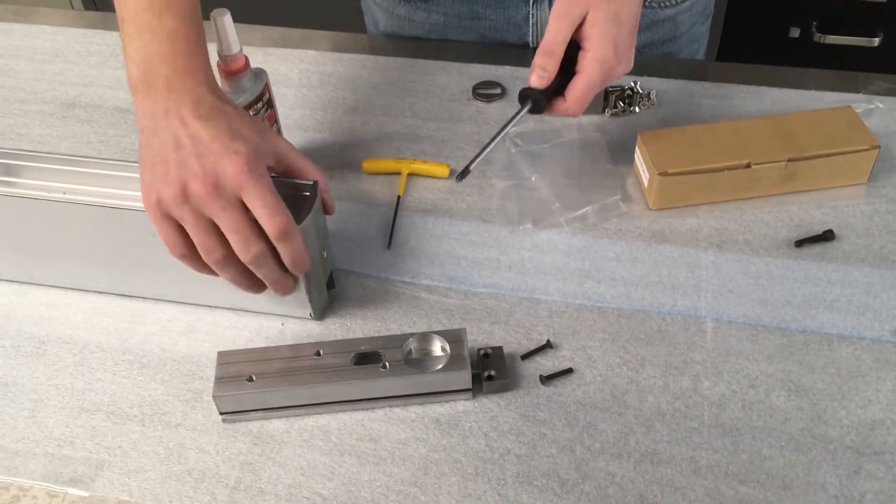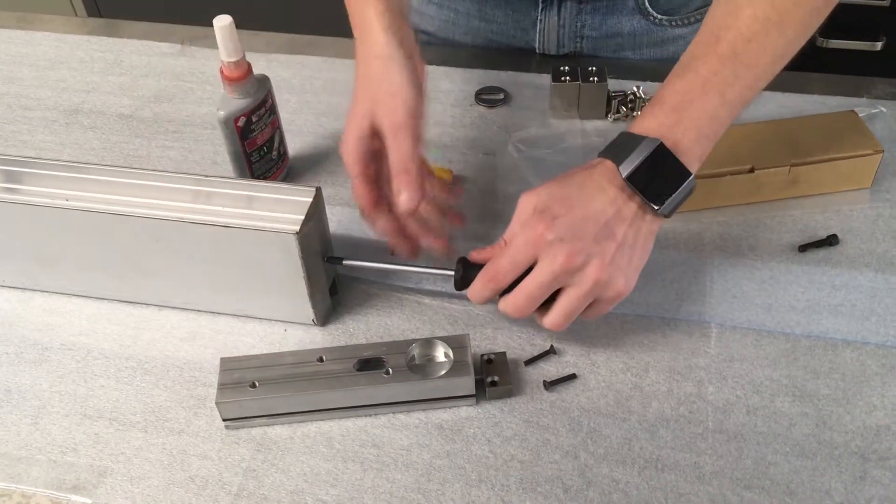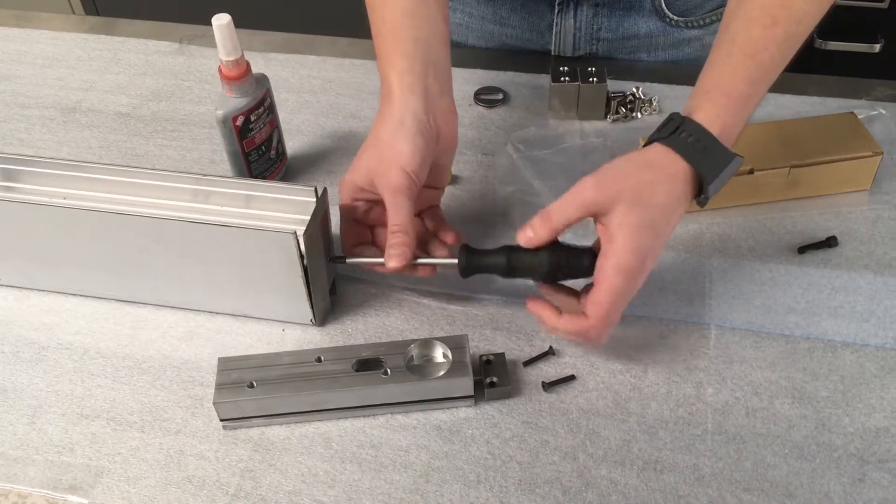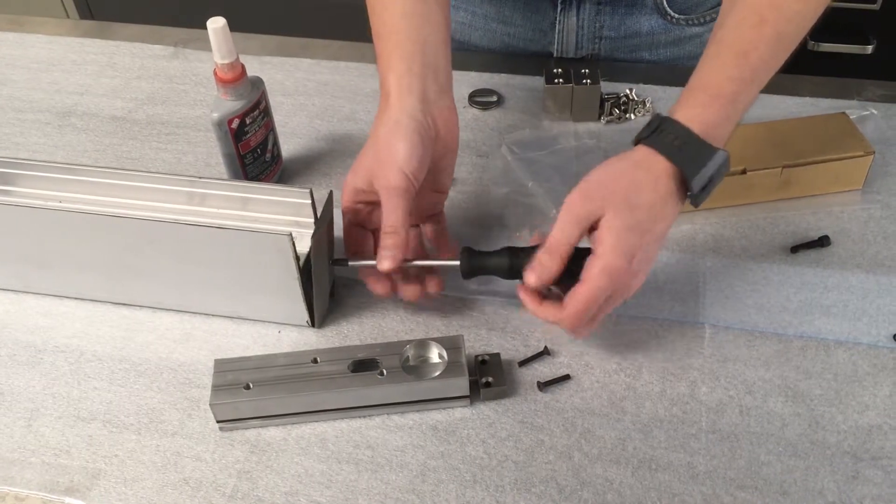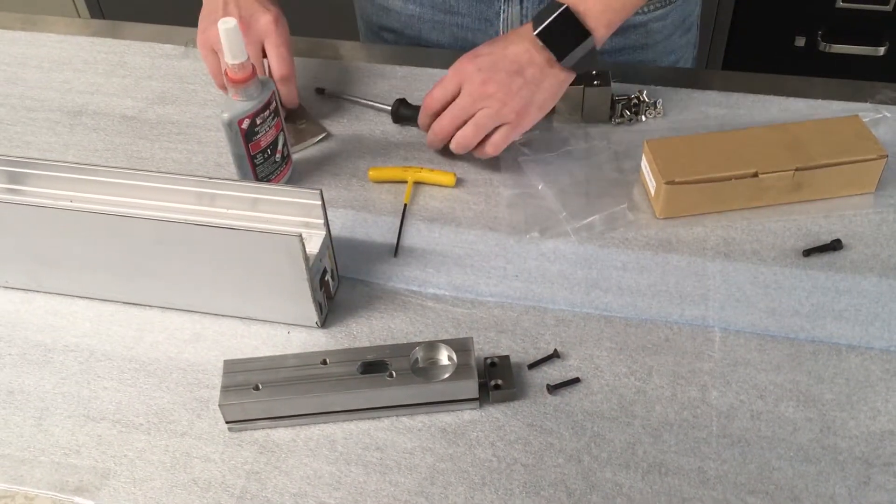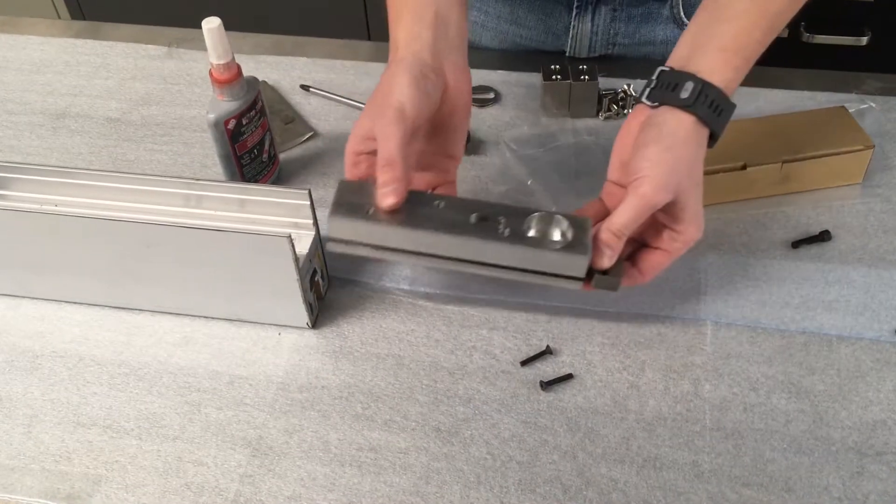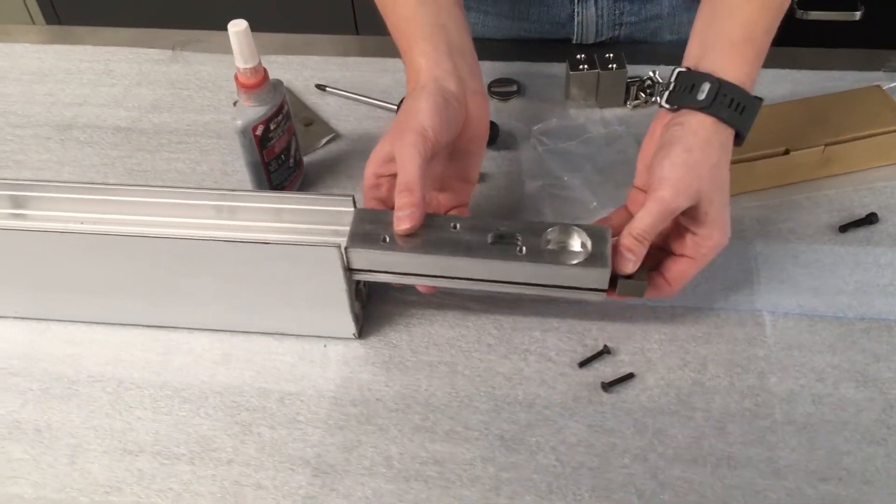So now that you have your sub-assembly assembled, we'll want to remove the end cap from the door rail using a Phillips screwdriver. Now all we need to do is slide the assembly in the base of the door rail.